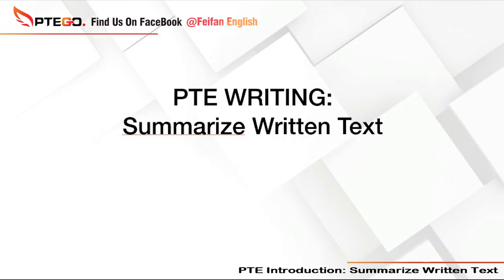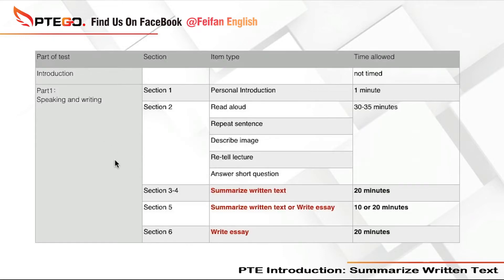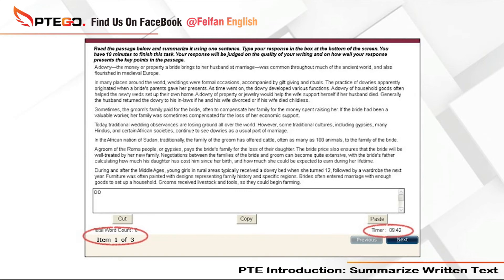Let's look at the organization of the questions first. Summarized written text and write an essay are both part of the writing section. You usually get two to three summarized written text questions and you have 20 minutes in total. You are supposed to read a passage, something like what you can see on the screen.